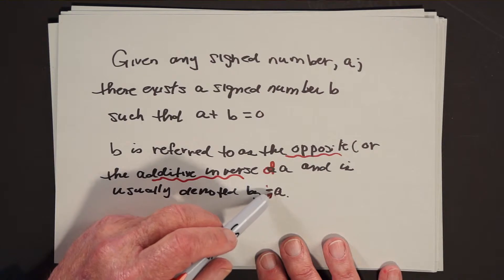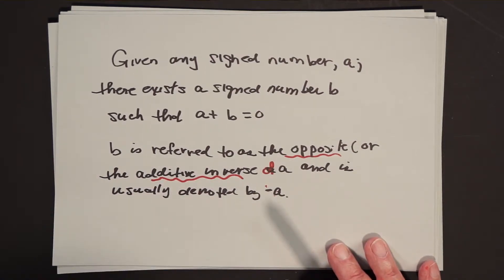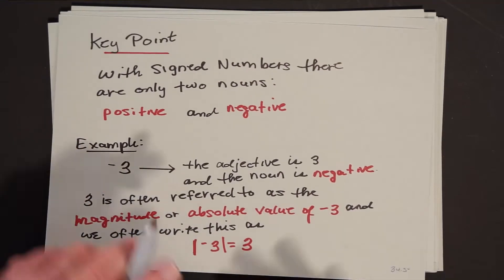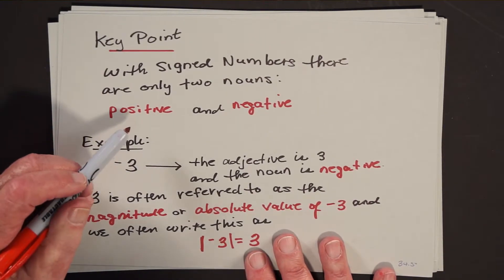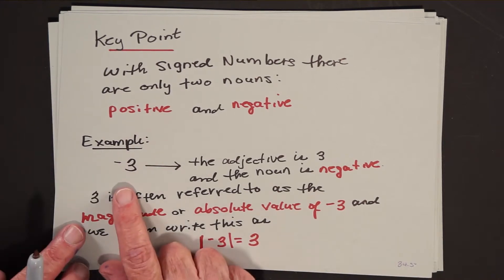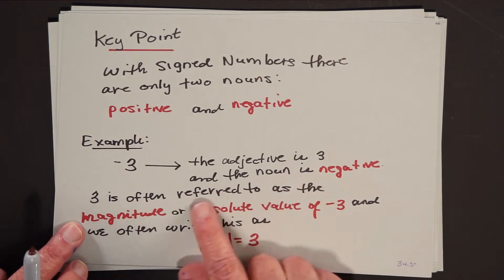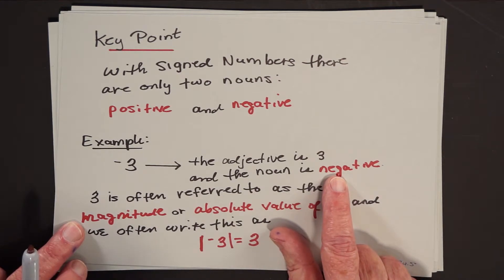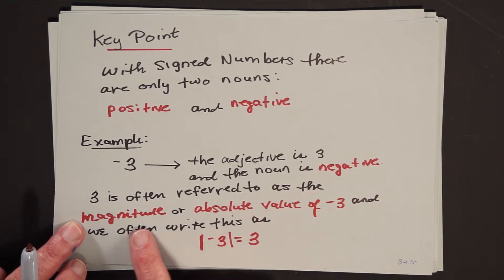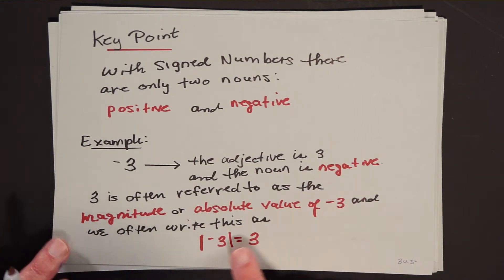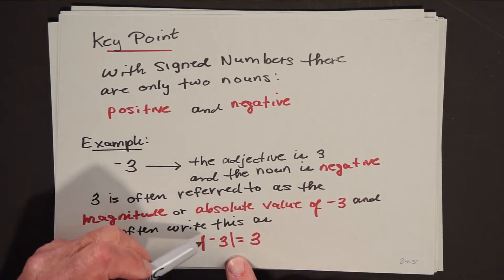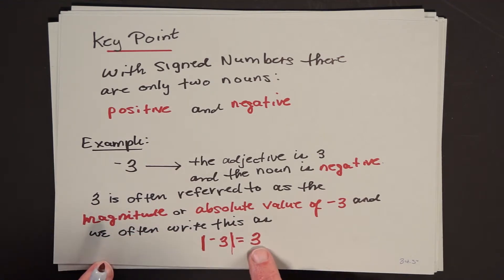With sign numbers, there are only two nouns: positive and negative. For example, when you write negative three, the adjective is three and the noun is negative. Three is often referred to as the magnitude or the absolute value of negative three, and we often write this enclosed in vertical bars as equals three. Positive and negative are really relative terms: if it's not one noun, it has to be the other.